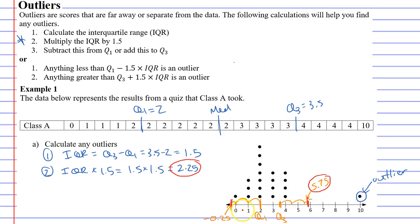5.75 and negative 0.25. And they mark, these markers help us find outliers because anything outside these markers is an outlier. Now you'll notice that all the data is inside them except the 10. 10 being the outlier.